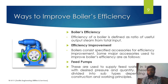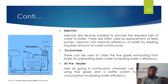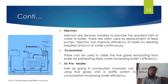The second accessory is injectors. Injectors are devices used for providing high-pressure water of the required quality to the boiler, and these are often used as a replacement for feed pumps. The third accessory is economizers — these are installed around the chimney of the boiler and are used for utilizing flue gases from the boiler and preheating the feed water.